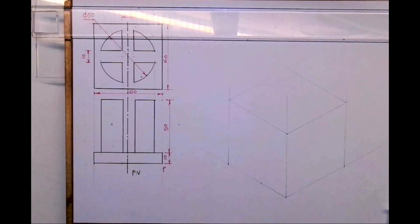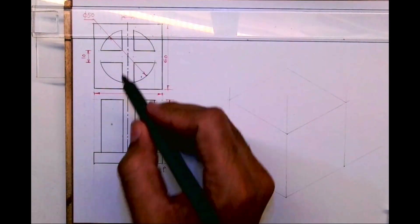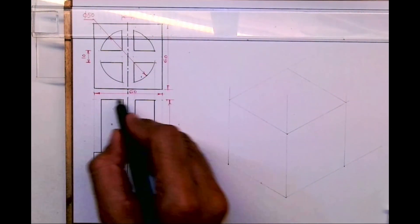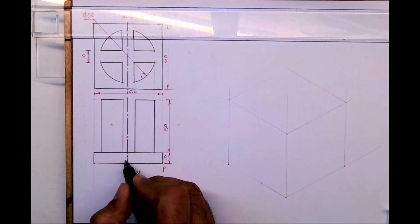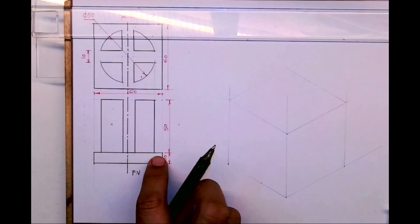Welcome to technical drawing. Today we'll see this sum in isometric. Now if you see, the length, width, and height is 60, 60, 60, so I'll draw a box like that. Then this is part one, which is a square block.